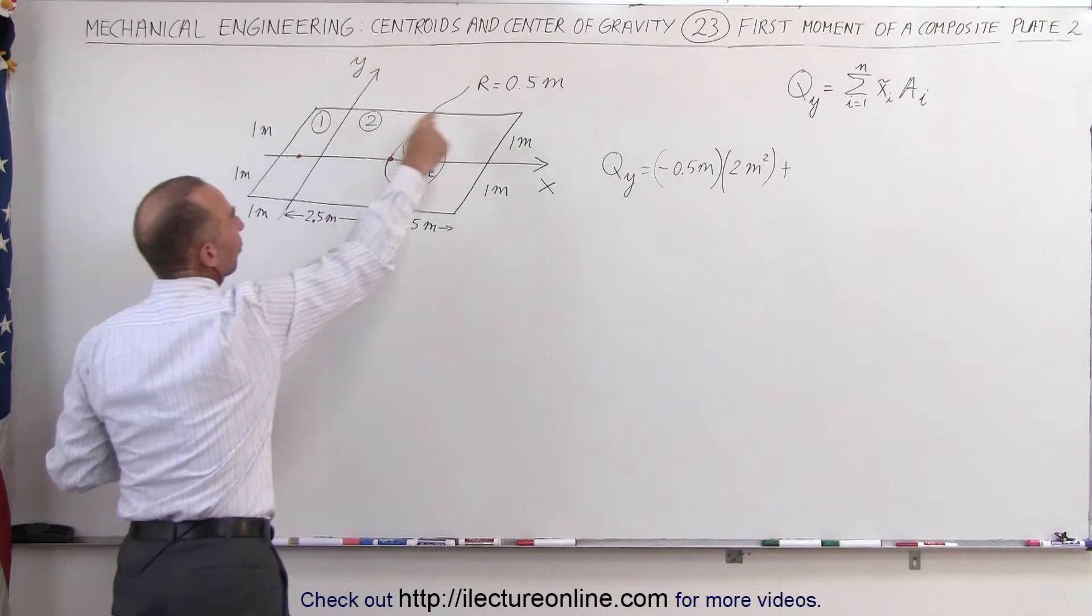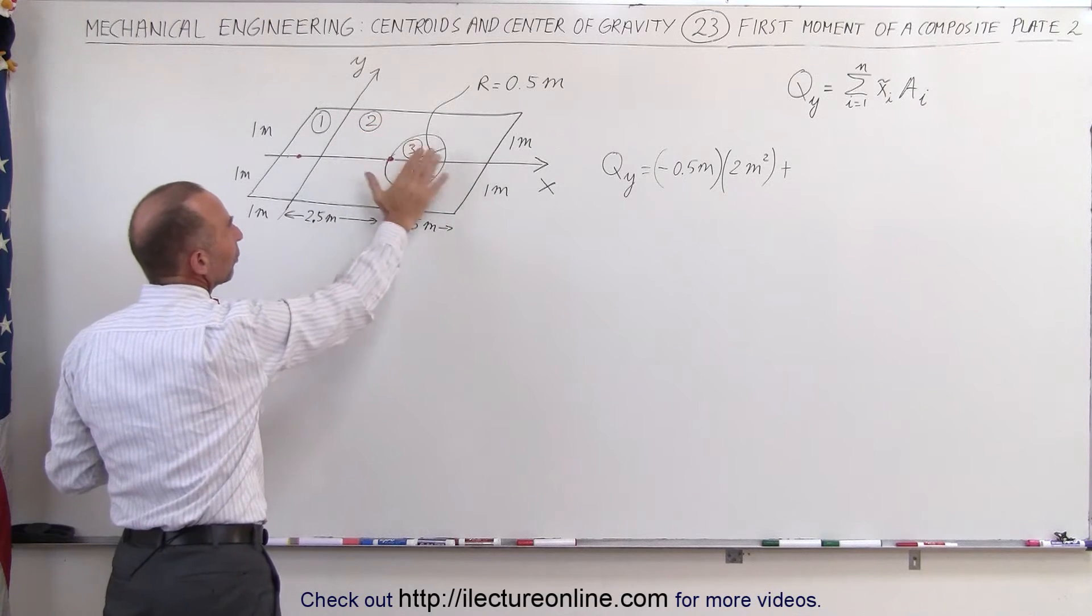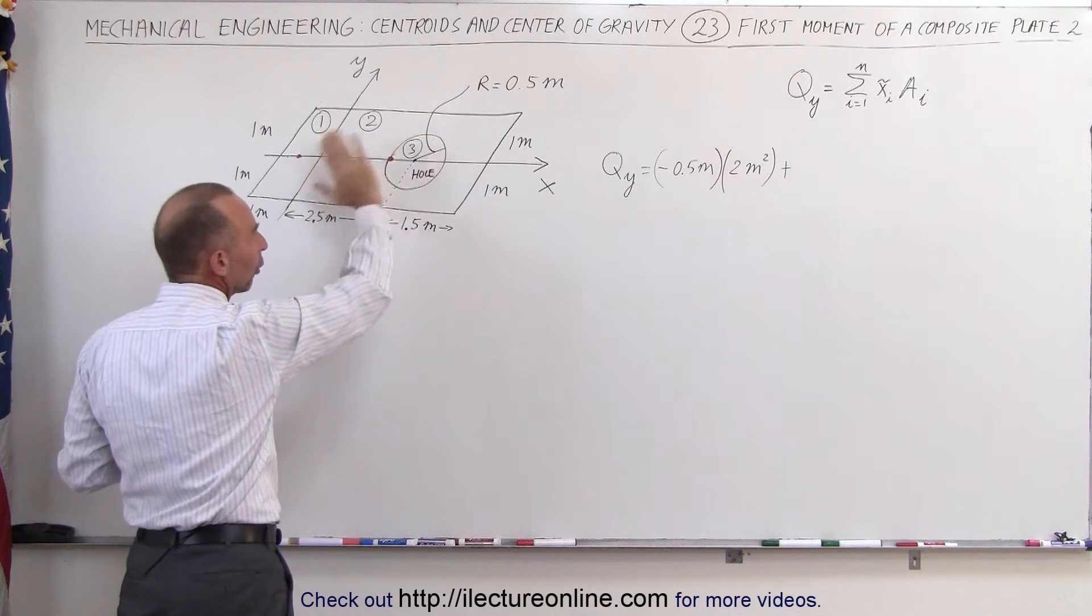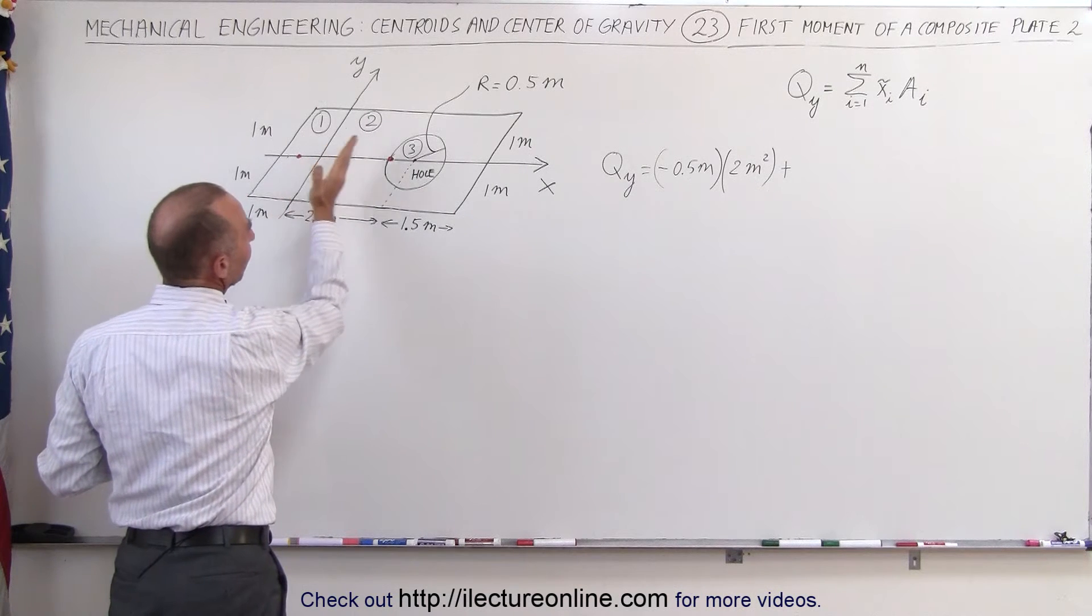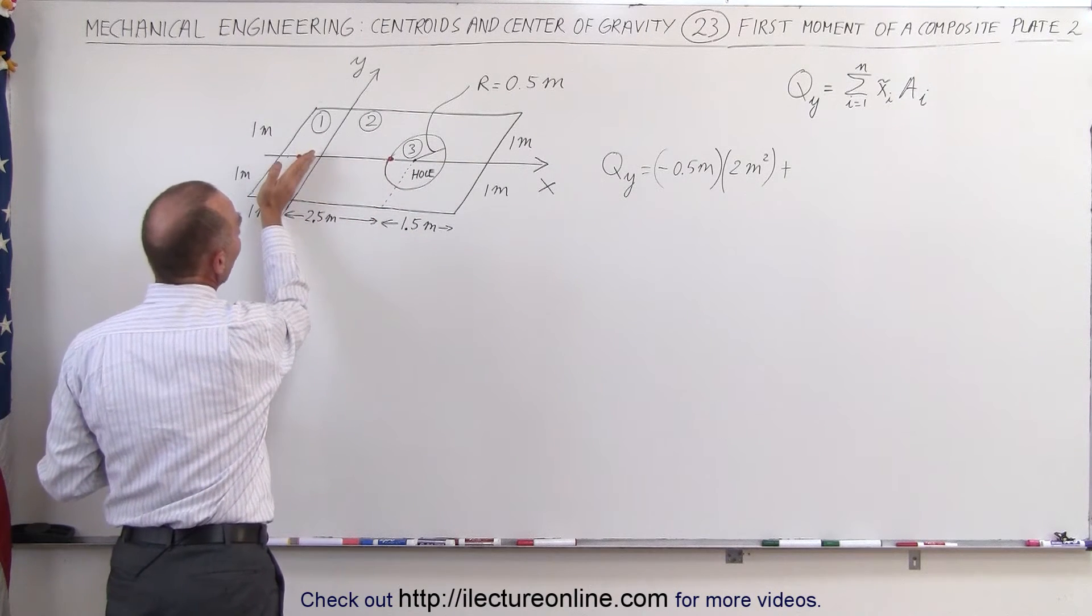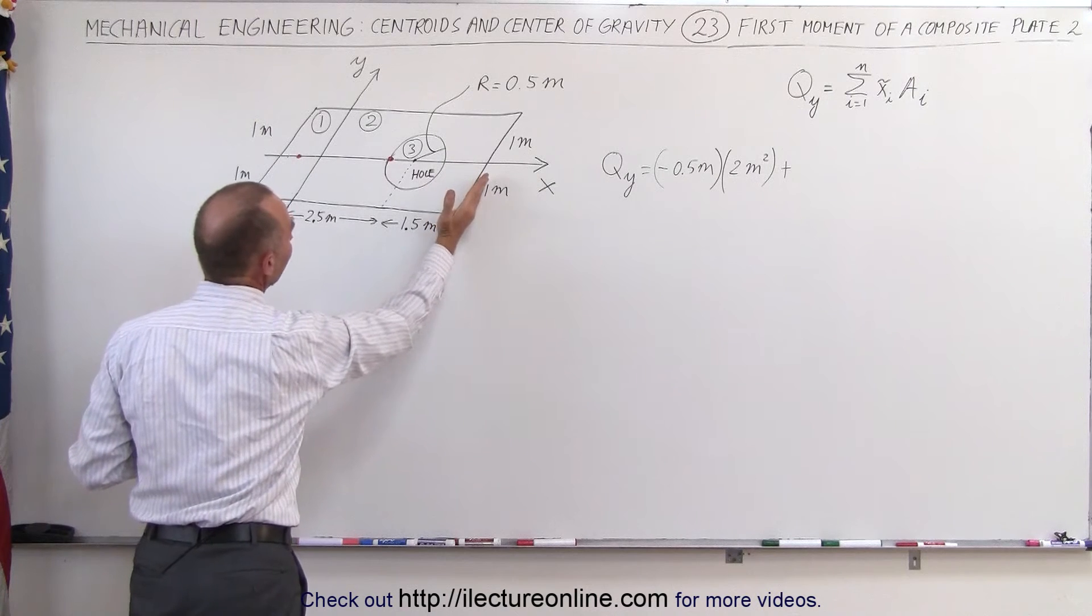And now for the second portion right here we have a rectangle. We're going to ignore the hole, assume the hole is not there, we take the entire plate. The center mass of that rectangular portion would be halfway between the y-axis and the edge of the rectangle.